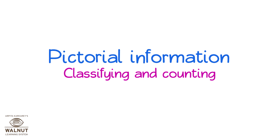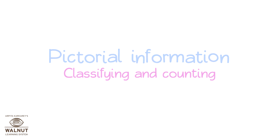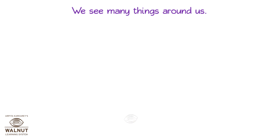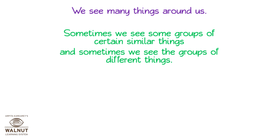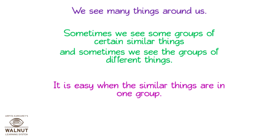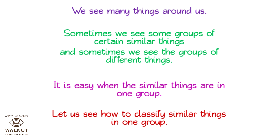Pictorial Information: Classifying and Counting Things. We see many things around us. Sometimes we see some groups of certain similar things, and sometimes we see groups of different things. It is easy when similar things are in one group. Let us see how to classify similar things in one group.